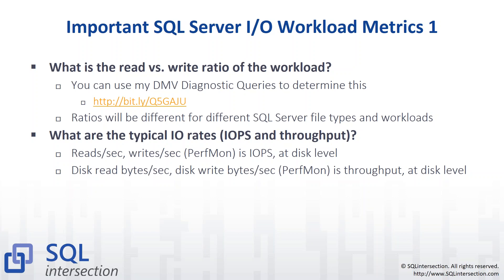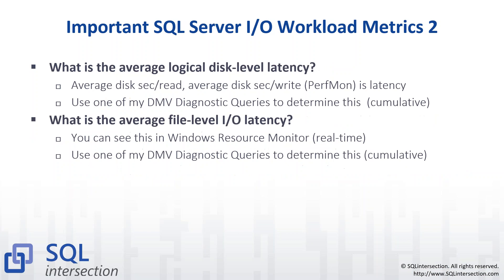You can look at Perfmon and get reads per second and writes per second, which is IOPs at the logical disk level. Then you can get read bytes per second and write bytes per second — that's your throughput at the disk level. Then you can drill deeper to figure out your average logical disk-level latency from a DMV query, and then drill into the file level. For your individual database files — each data file and log file for all your databases — you can see what's been going on and understand how your system is performing.